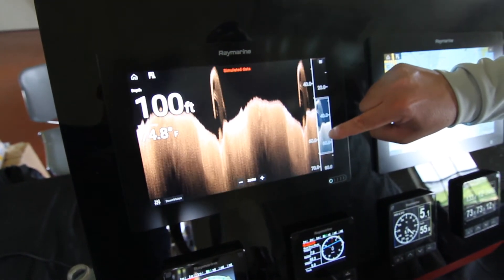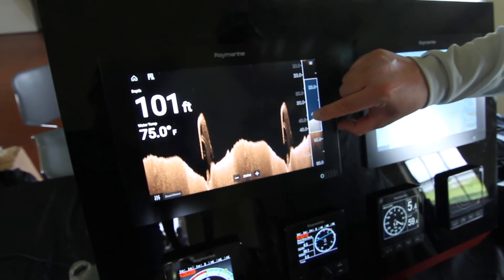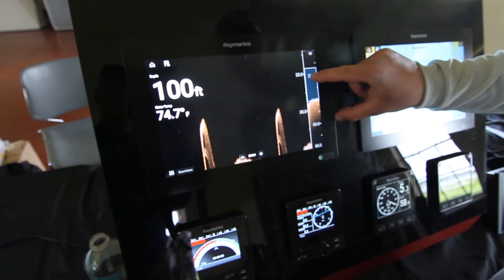This is great when you want more detail on the bottom or maybe when you have a jig over the side and you're trying to actually see it in the display. If you need a little more magnification, just touch plus again. Now we're at three times magnification.